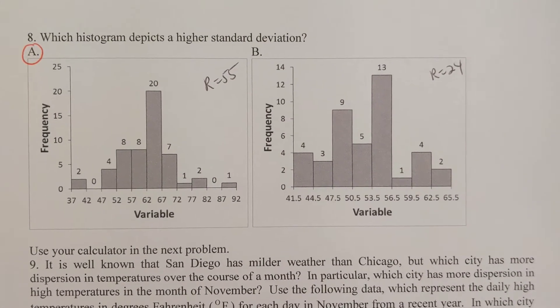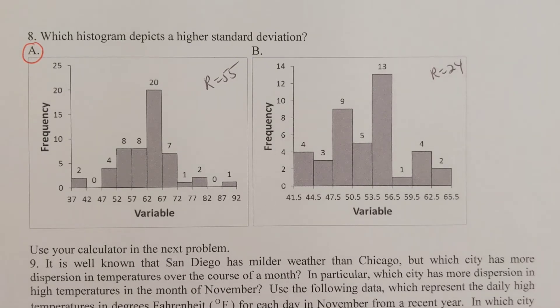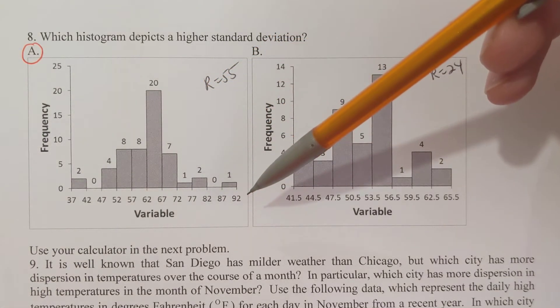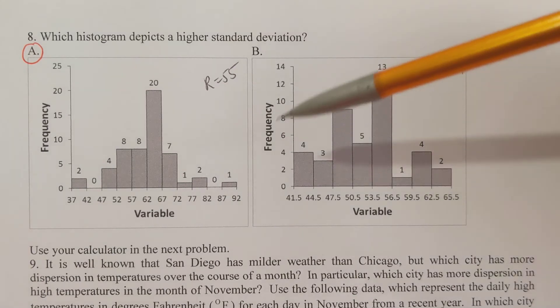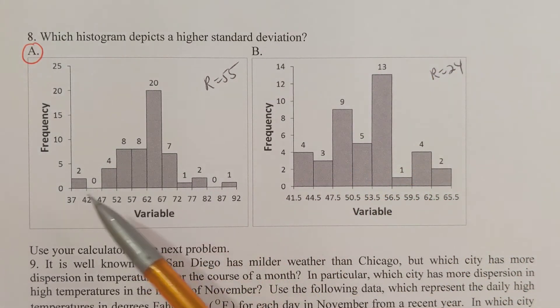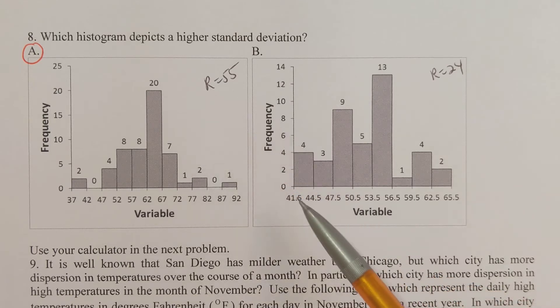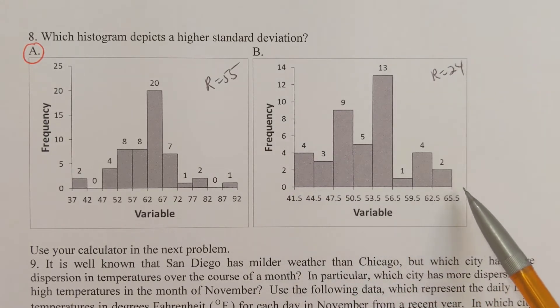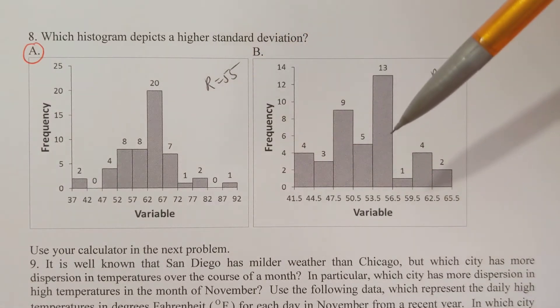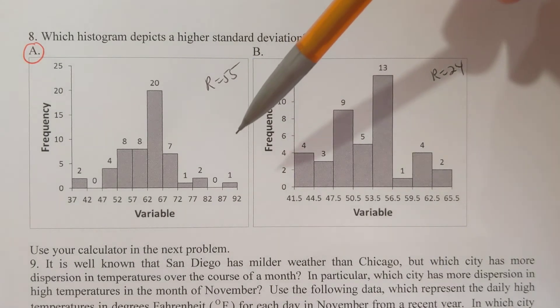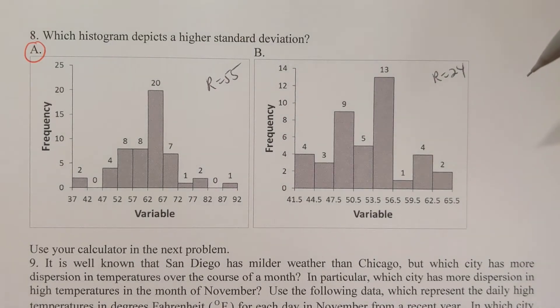Problem 8: which histogram depicts a higher standard deviation? Remember the standard deviation is the spread in the values, so I need to be looking at the horizontal axis here and how those are spread out. I've got the range figured out: if I go 37 to 92, that would be a range of 55. And if I go 41.5 to 65.5, that'd be a range of 24. Which histogram is going to have a higher standard deviation? It's going to be the one in part A since part A had a bigger range. Remember the bigger the range, the bigger the standard deviation; the smaller the range, the smaller the standard deviation.